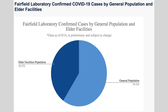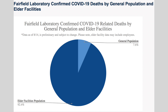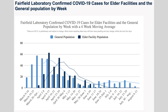A little bit below that, we broke the cases and deaths out by nursing homes or assisted living — which we group together as elder facilities — versus the general population. We did that because Fairfield has seven nursing homes or assisted living facilities, and our case numbers increased quite a bit because there were some outbreaks in these facilities. So we wanted to break it out by cases, by death, and by specimen collection date, and you'll see that on those three charts.